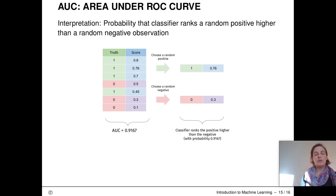We can interpret the AUC as a probability, the probability that a classifier ranks a random positive higher than a random negative observation. So, as an example, we take a random positive observation from a dataset and a random negative observation. If our AUC is, for example, 0.92, then the probability that the positive is ranked higher than the negative observation is 92%.